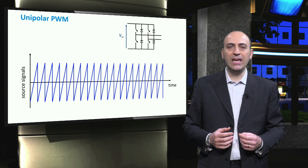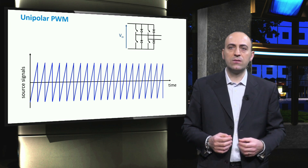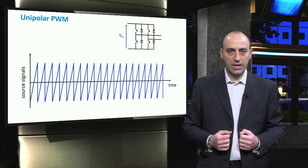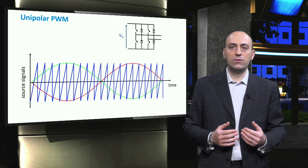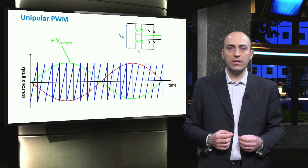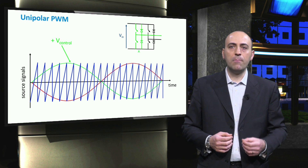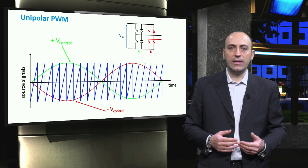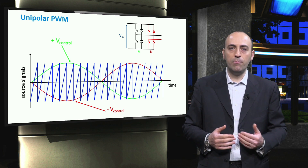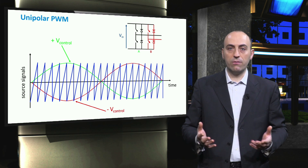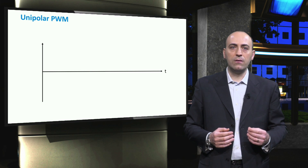Another possible PWM scheme is called the unipolar PWM voltage switching. In this case, the switches in the two legs of the H-bridge inverter are not switched simultaneously, as in the case of the bipolar scheme. Two signals are needed to control separately the two legs of the inverter. The first leg, usually called leg A, is controlled by comparing the sawtooth signal with a plus V control signal. The second leg, called B, is controlled with a minus V control signal. In leg A, when V control is higher than V sawtooth, the voltage equals the input voltage, while in the other case the voltage is zero. For switches in leg B, when minus V control is higher than V sawtooth, the voltage equals the input voltage, while in the other case the voltage is zero.